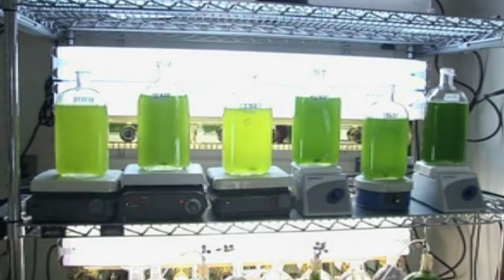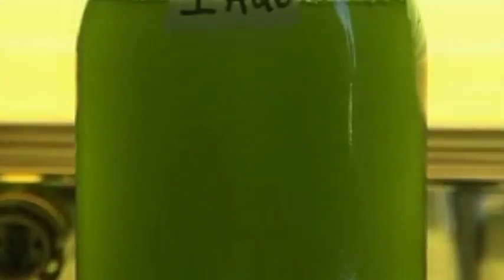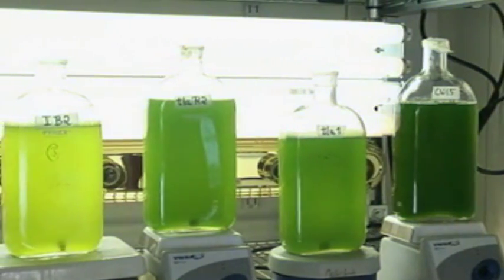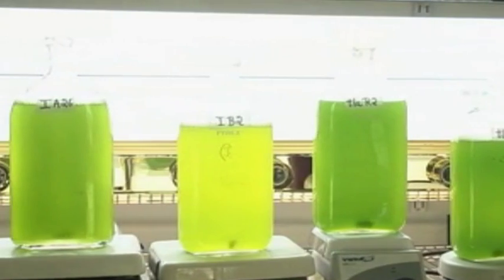The algae require four key nutrients for growth: carbon, nitrogen, phosphorus, and sulfur. What we do is we deny the algae sulfur. This reduces the amount of photosynthesis and damages the algal photosynthetic mechanism, so it reduces the amount of oxygen they're producing by photosynthesis.